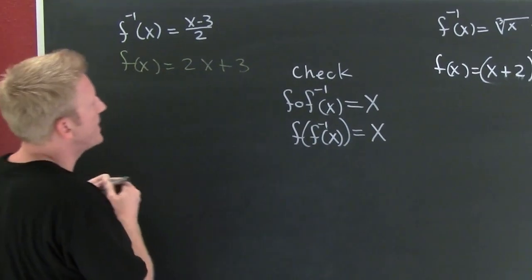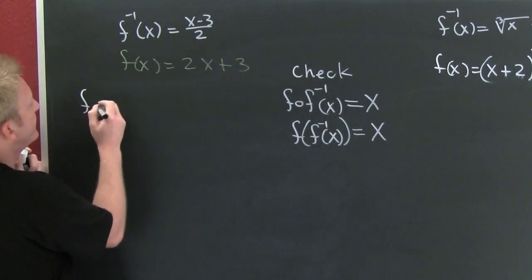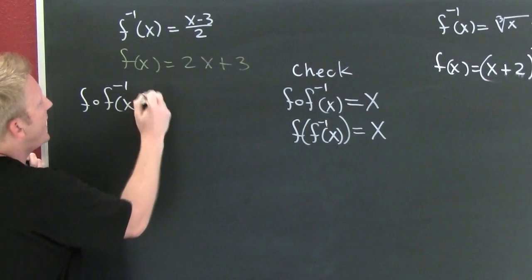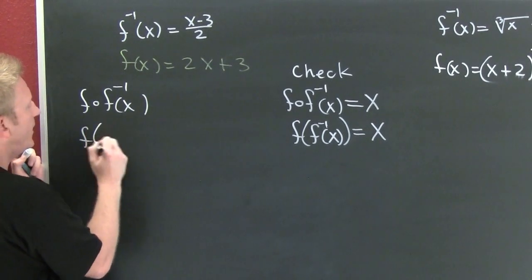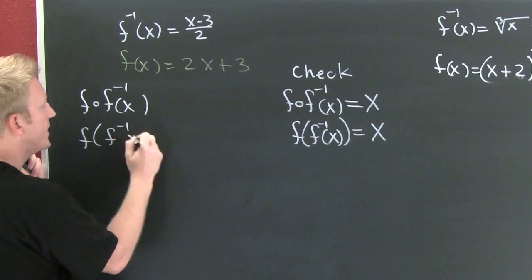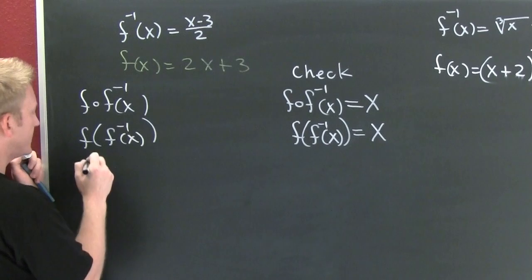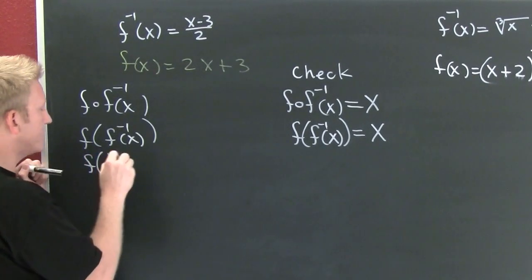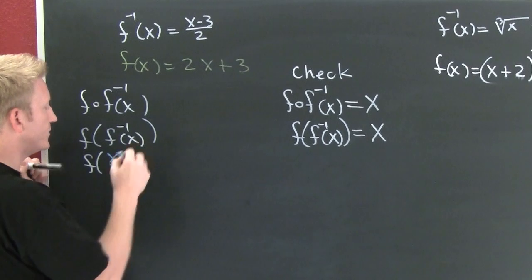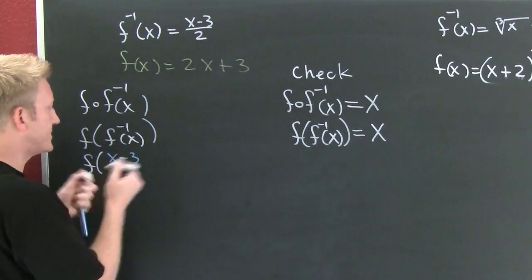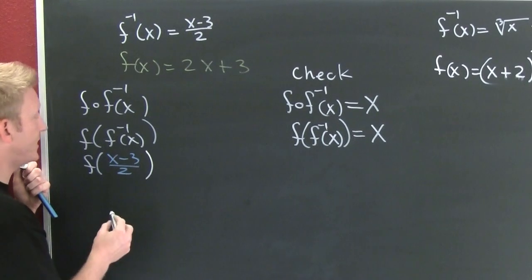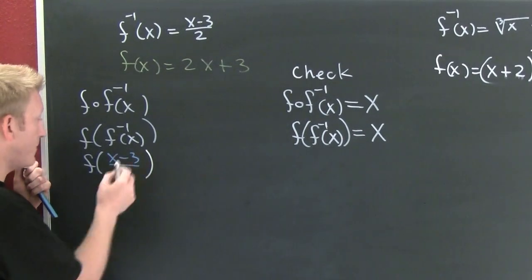Up here to this example. Let's look at f of f inverse of x. This is going to be f of f inverse of x. This is going to be f of my f inverse was found to be x minus 3 divided by 2.